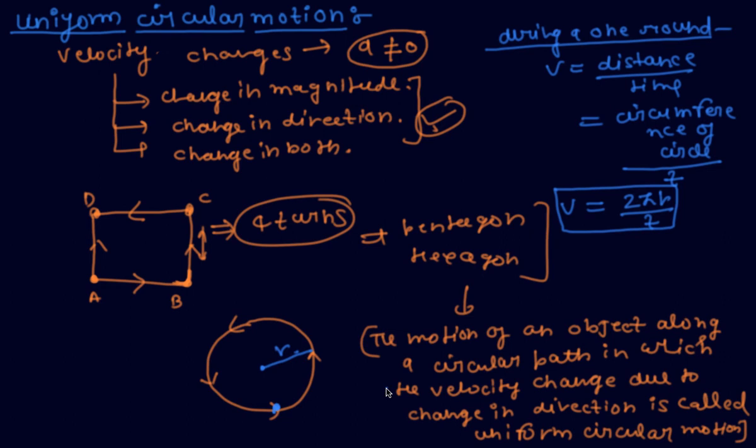Or we can also say that speed is constant. In definition form: the motion of an object along a circular path in which the speed of the object is constant is called uniform circular motion.